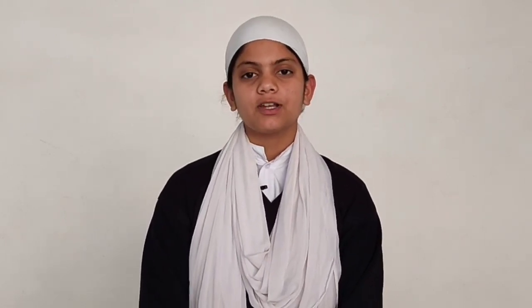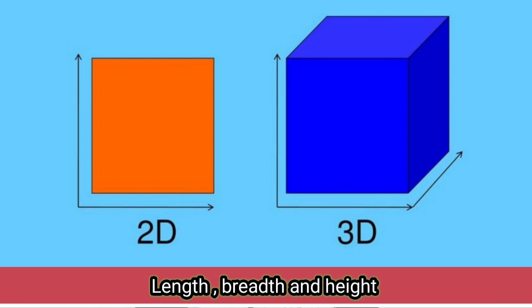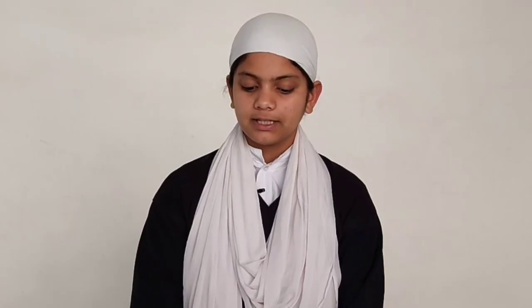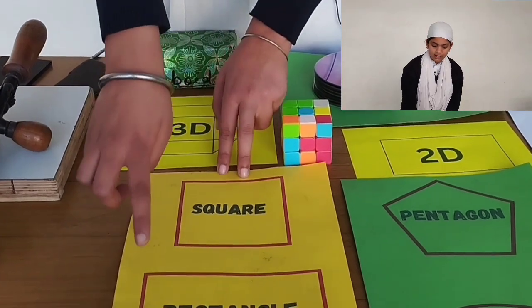First, let us talk about what really are 2D and 3D objects. Those objects which have only two dimensions — that is length and breadth — are known as 2D objects. Whereas objects which have all three dimensions — length, breadth, and height — are known as 3D objects. For example, here I have drawn a square and a rectangle on a piece of paper.